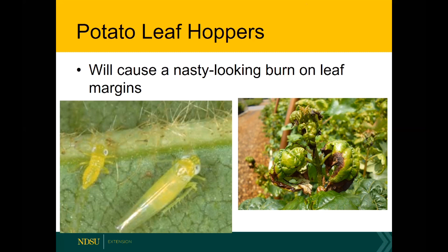Potato leafhoppers are somewhat easy to see — you can probably spot them with a hand lens just by looking on the underside of the leaves. If you see those insects, then you can say, okay, that's almost certainly what's going on.